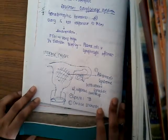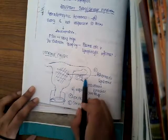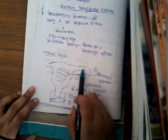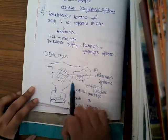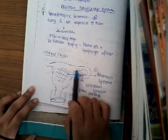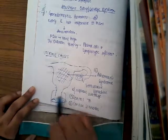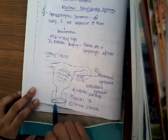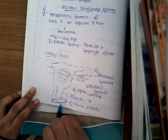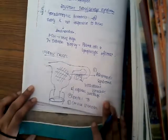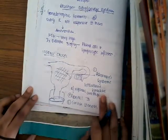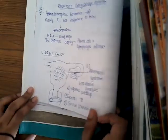Even if there is cervical stenosis, though the ovum is released and endometrial changes occur, the menstrual blood cannot come out. These are the main uterine causes of secondary amenorrhea.